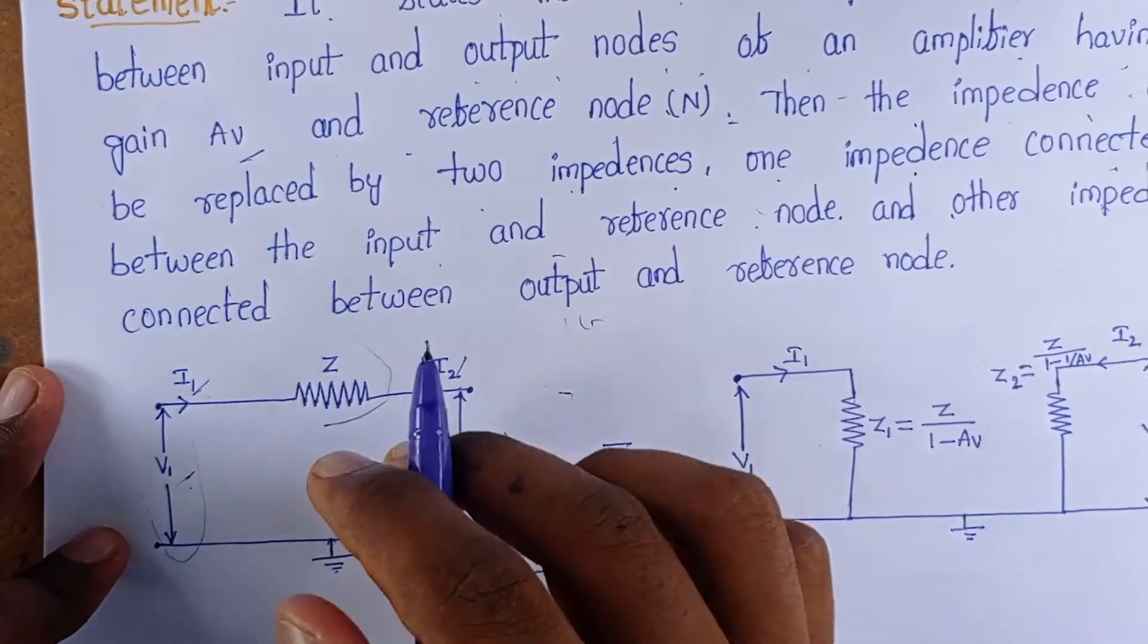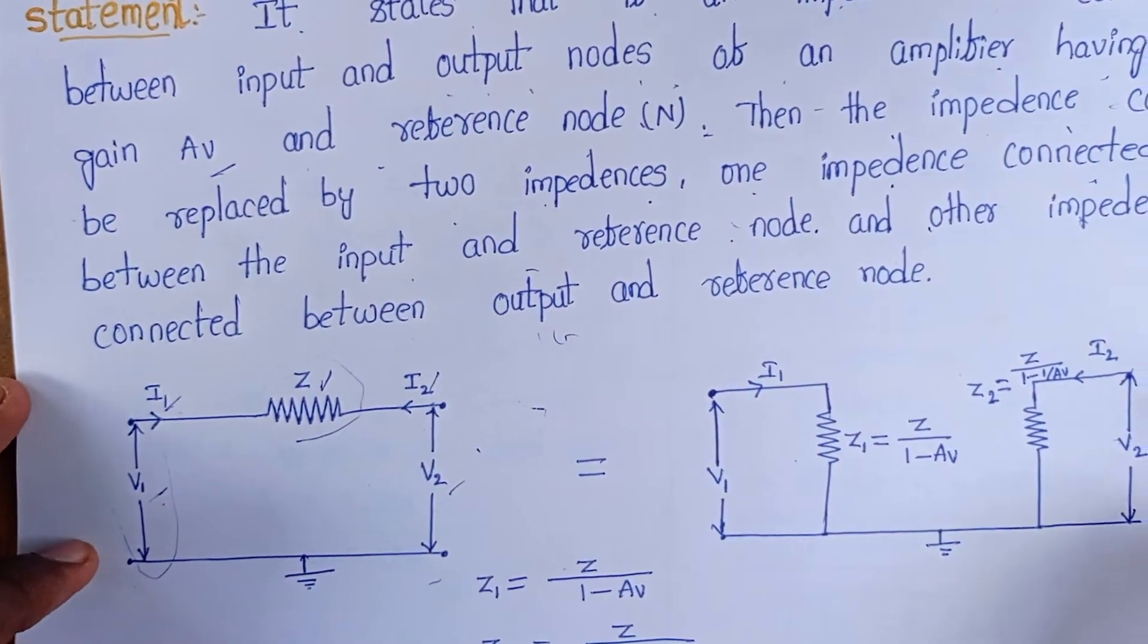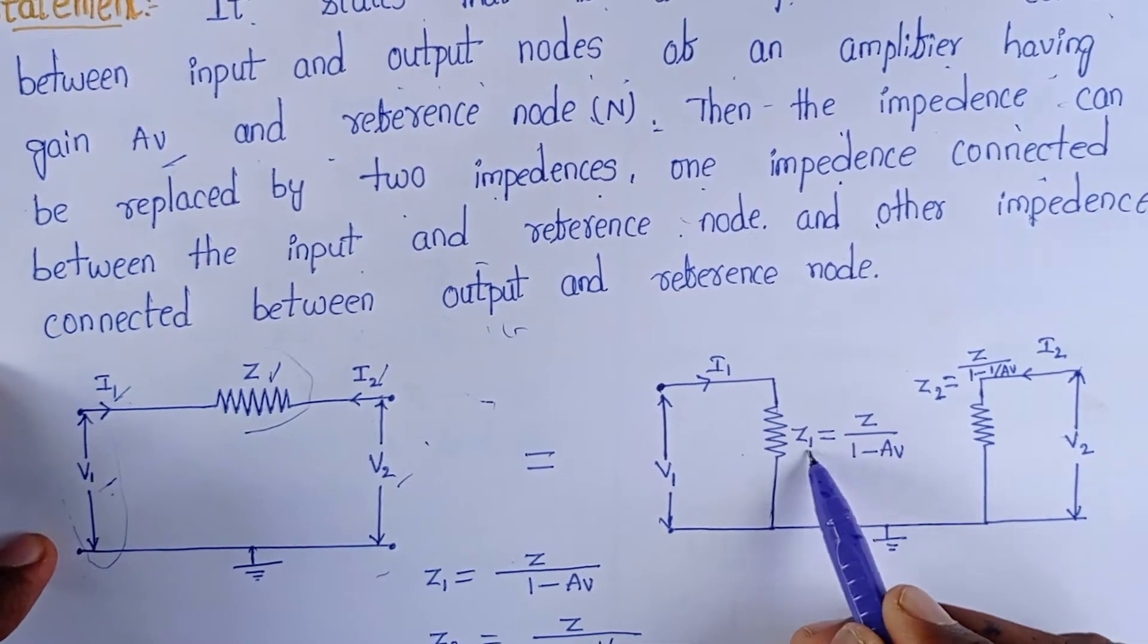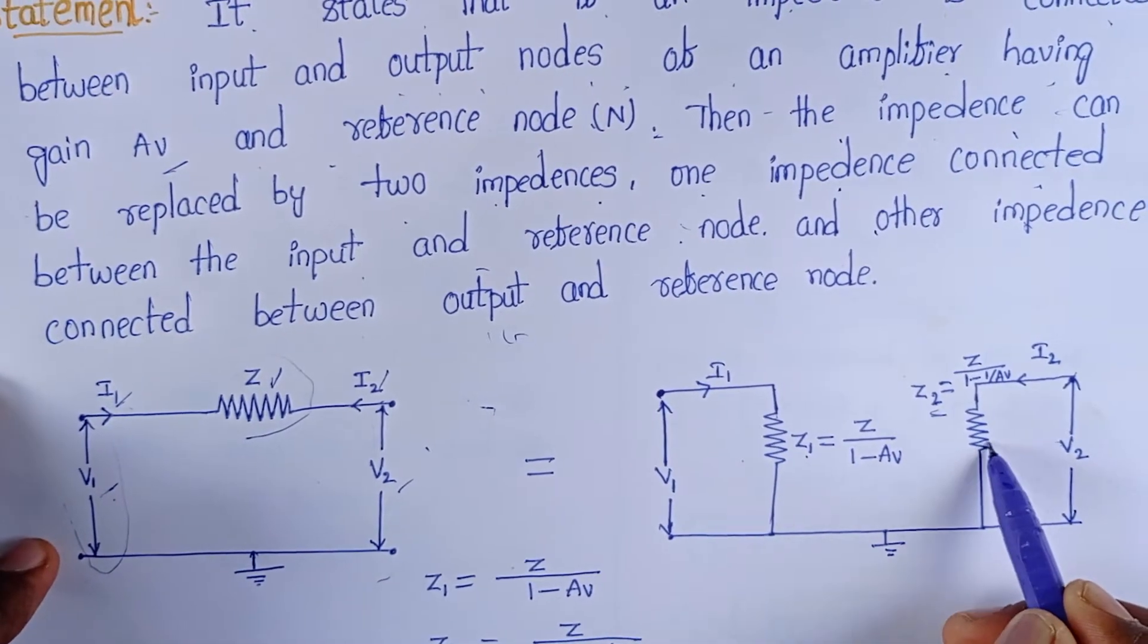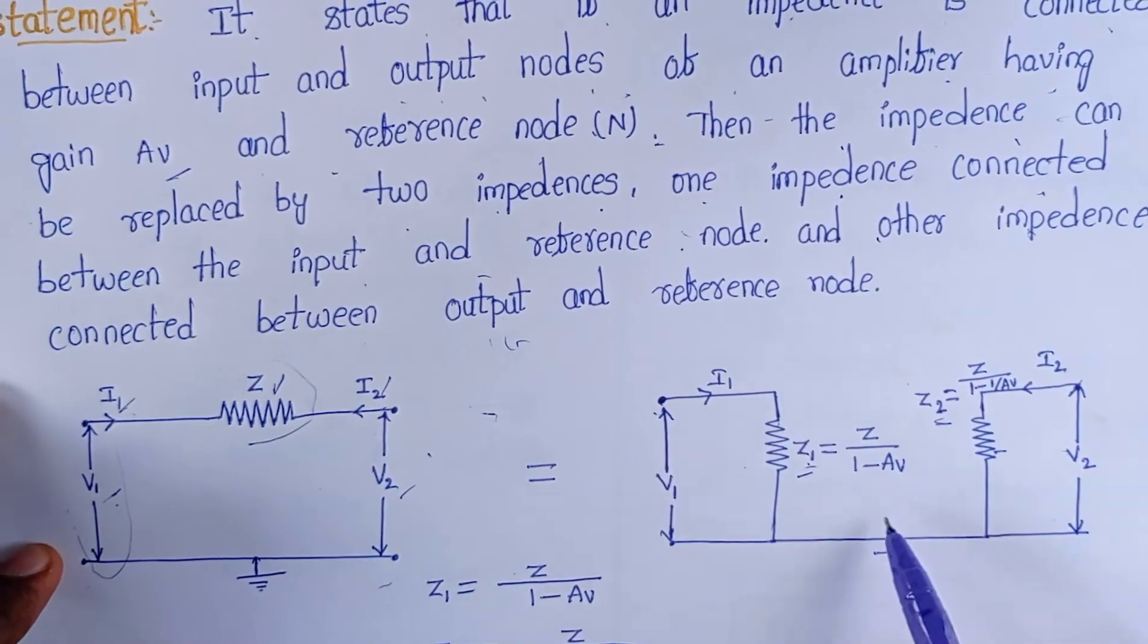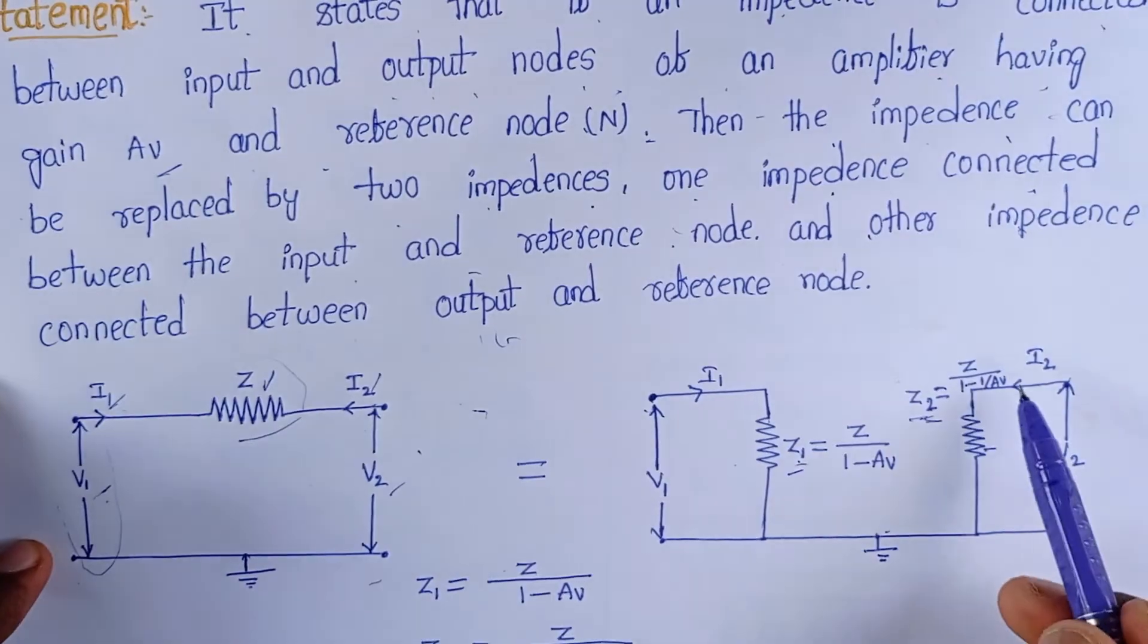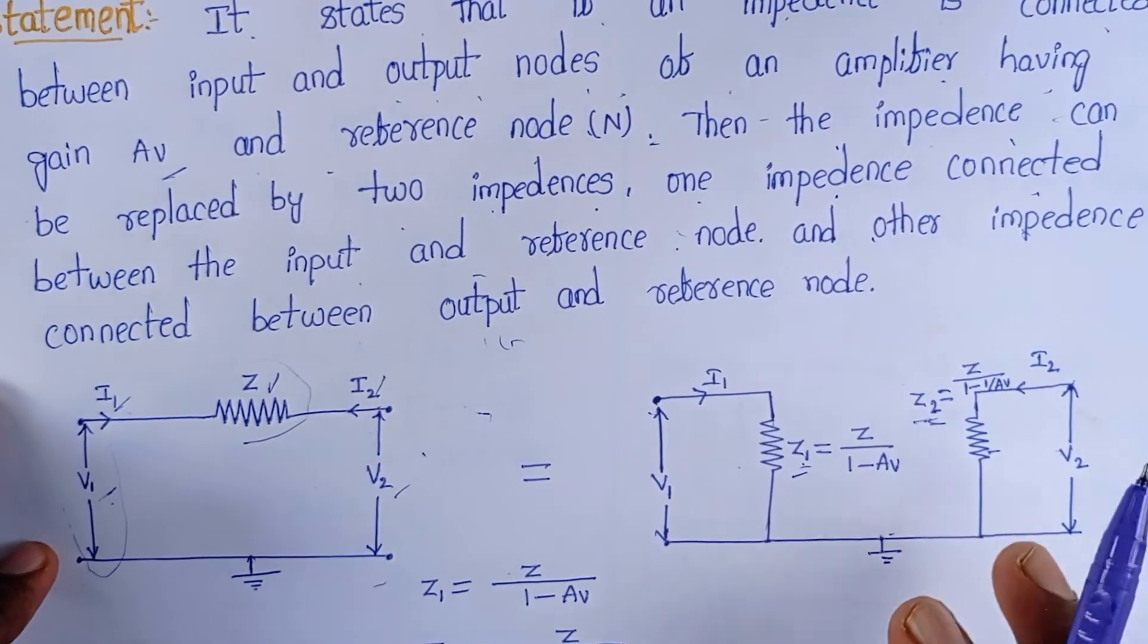I can represent this impedance into two impedances like this, Z1 and Z2. This is Z2 and this is Z1. Z1 is connected between the input and reference node and Z2 is connected between the reference node and output.